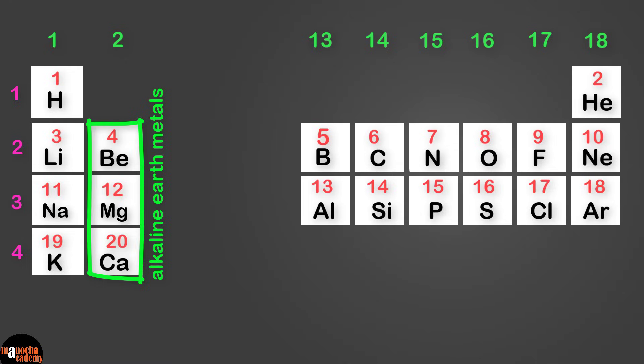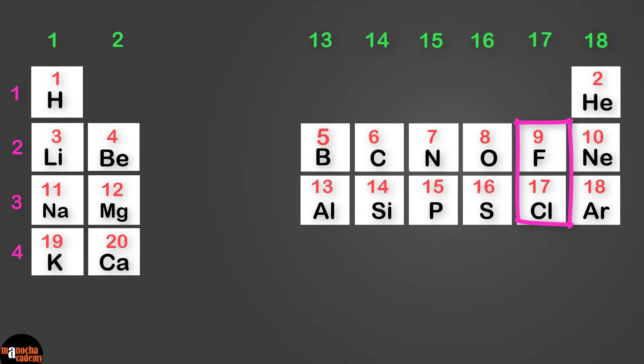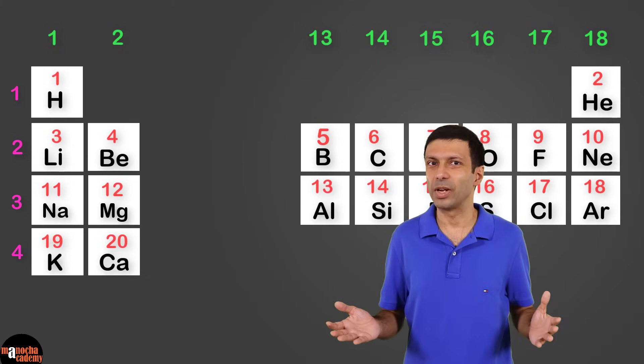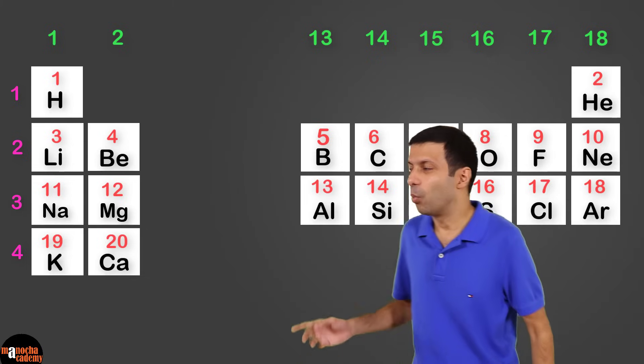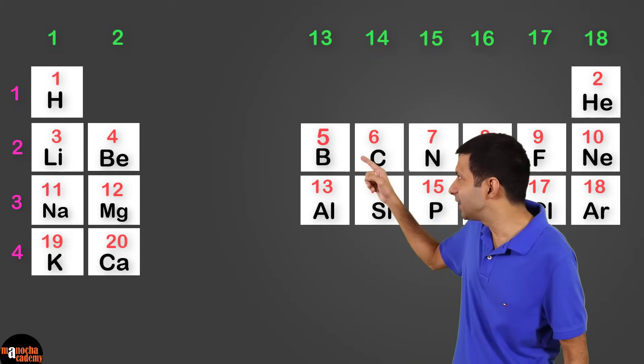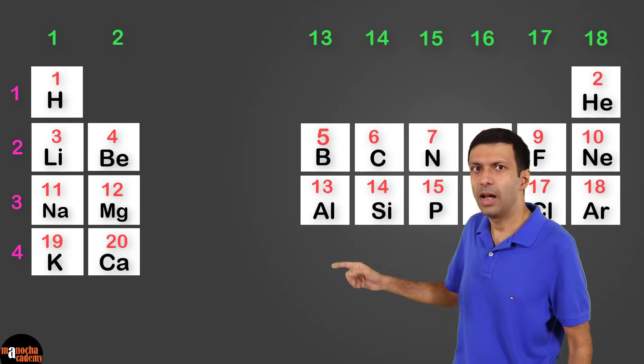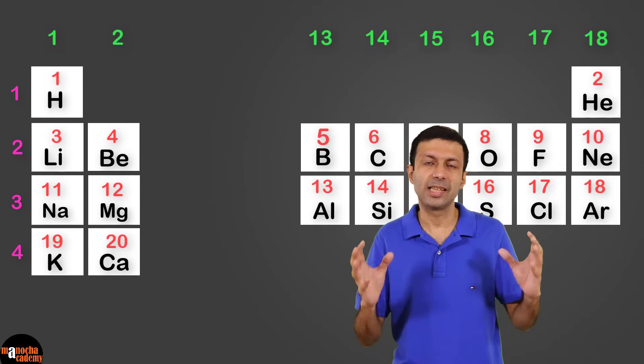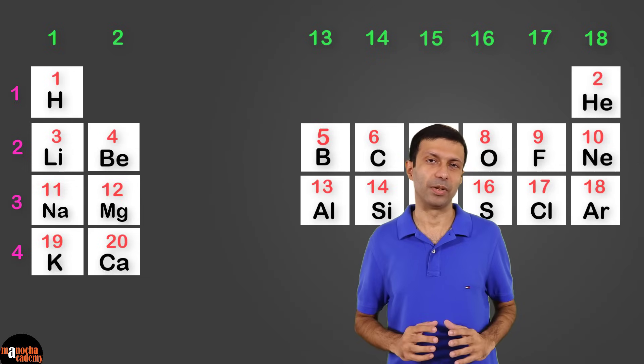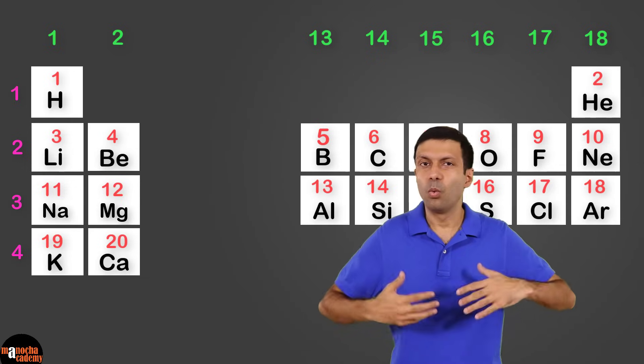Now let's look at group 2. Once again, we see there are metals in this group. They are called alkaline earth metals and they also have the same valency.